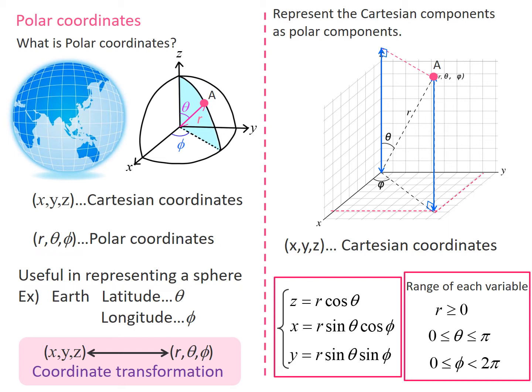Now, let's think about the problem. The problem is to express the x, y, z of the Cartesian coordinate by r, theta, phi of the polar coordinate.